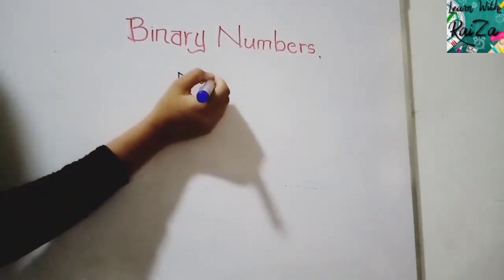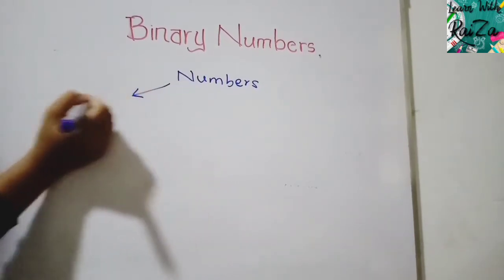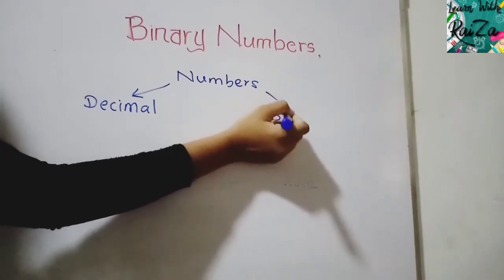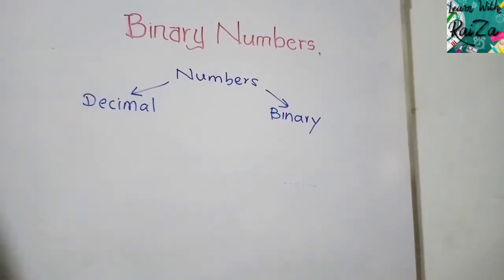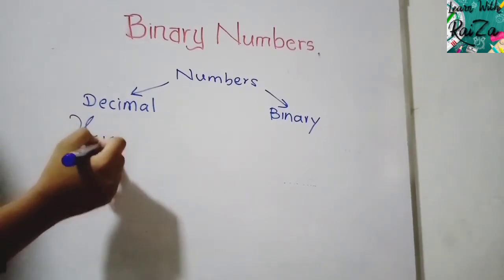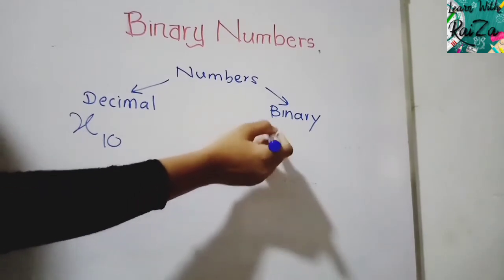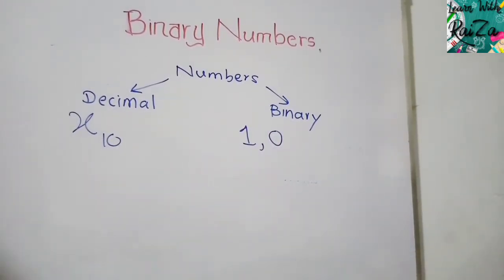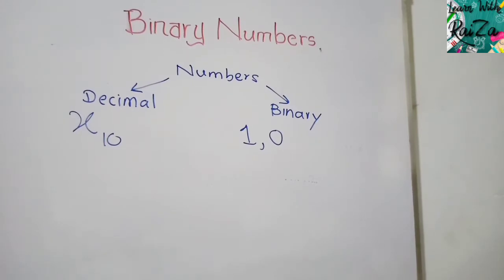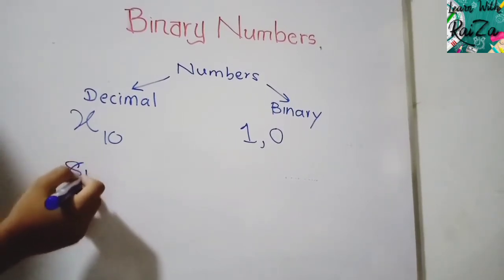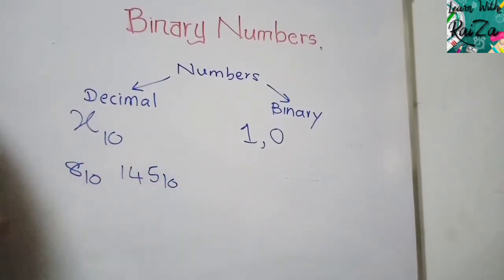There are two types of numbers we need to know: decimal numbers and binary numbers. Decimal numbers are any number with base 10 — for example, 8 or 145 to the base 10. Binary numbers consist only of ones and zeros; you can't use any other digit. Binary is usually called the computer language, as computers understand numbers in this form.